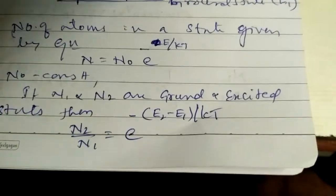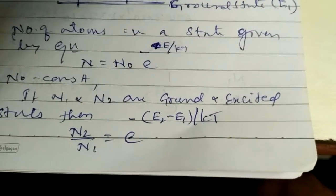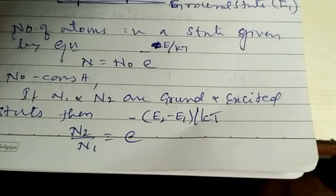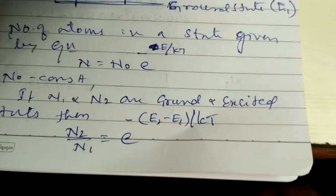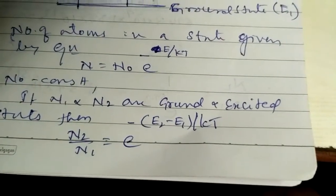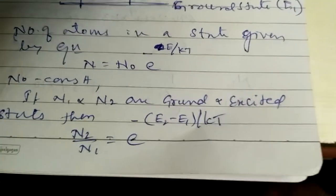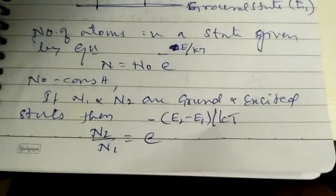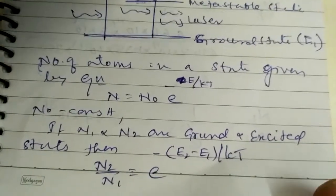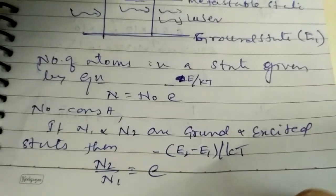then the ratio of the excited state to ground state, N2/N1, equals e^(-(E2-E1)/kT) according to the above equation. Let us calculate a numerical example.